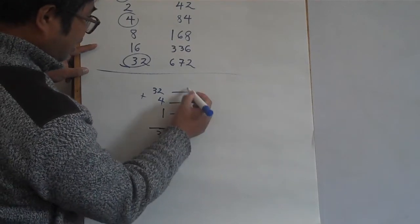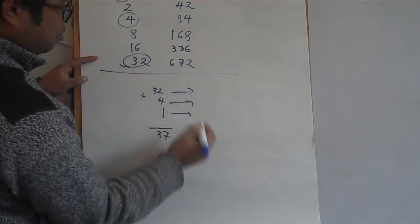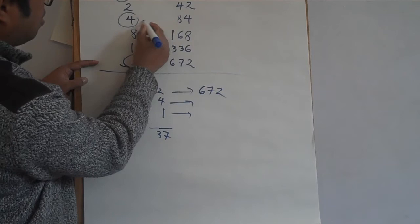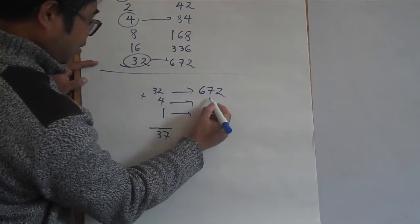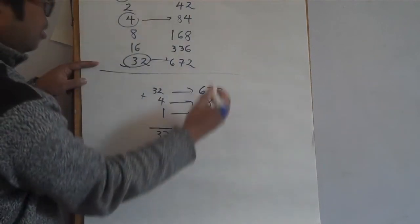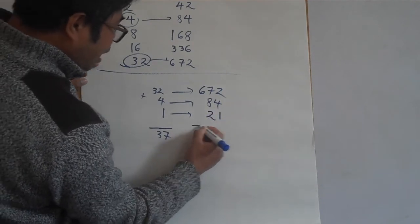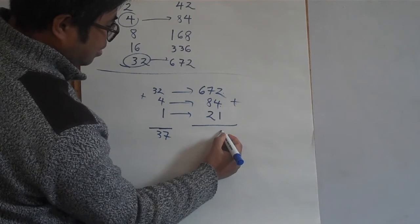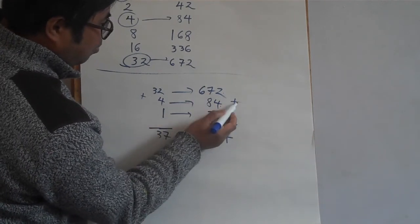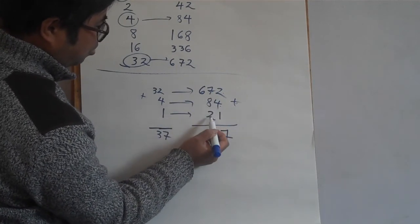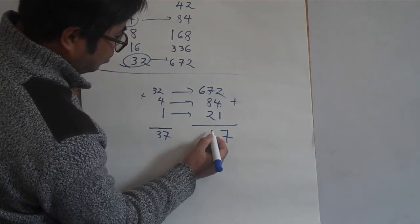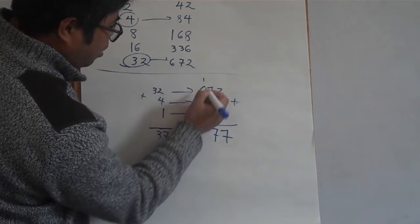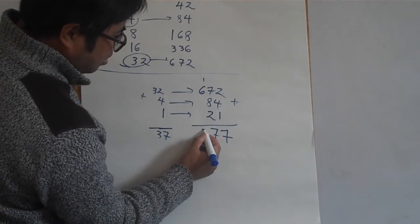What's next to thirty-two? Six hundred and seventy-two. What's next to four? Eighty-four. What's next to one? Twenty-one. We add them together: seventy-two plus eighty-four plus twenty-one. The units give seven, the tens give seventeen — carry the one — and six hundred plus one hundred is seven hundred. So the answer is seven hundred and seventy-seven.